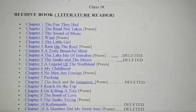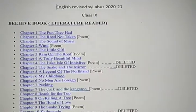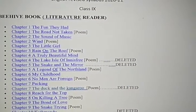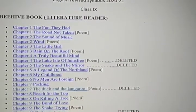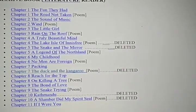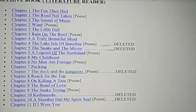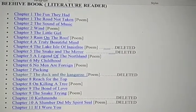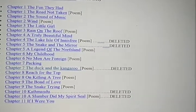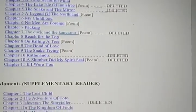There are certain lessons from your literature part as well as from your grammar part which have been deleted. You can see here: The Lake Isle of Innisfree, The Snake and the Mirror, The Duck and the Kangaroo, Kathmandu, A Slumber Did My Spirit Seal. These poems and lessons are deleted from your Beehive book.